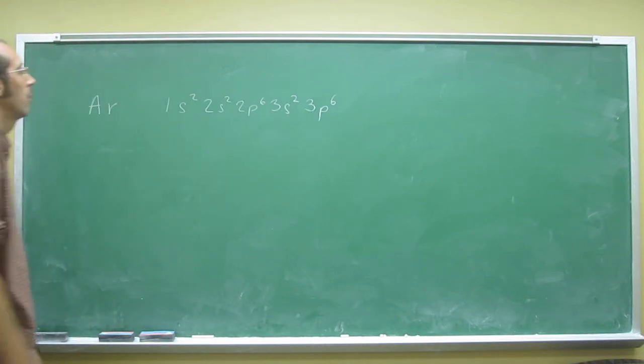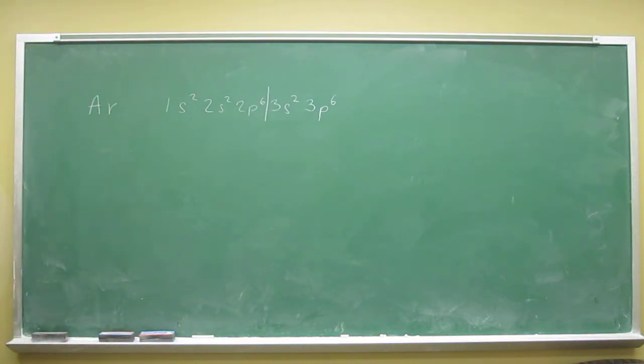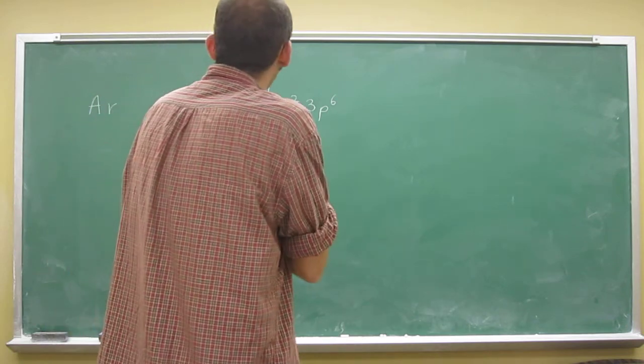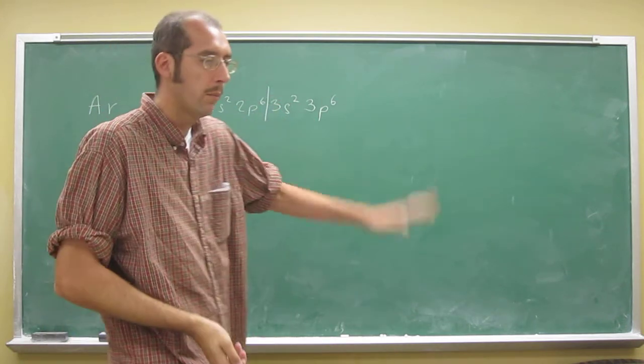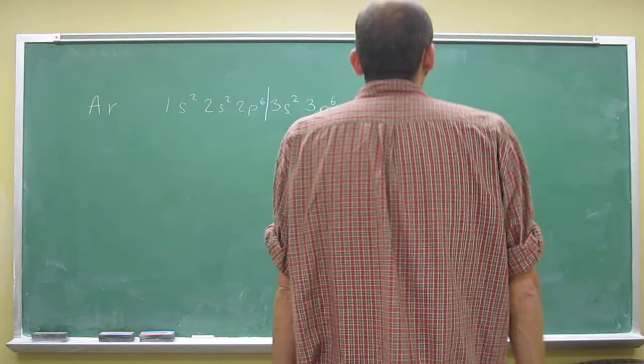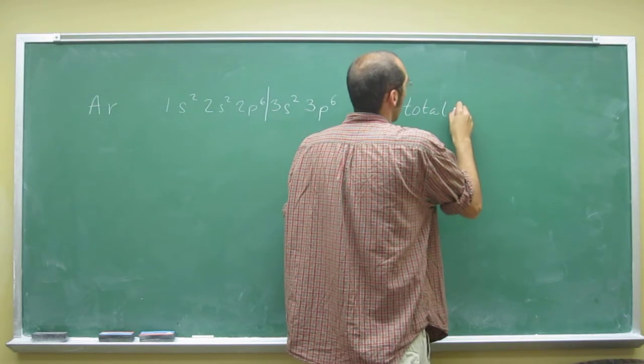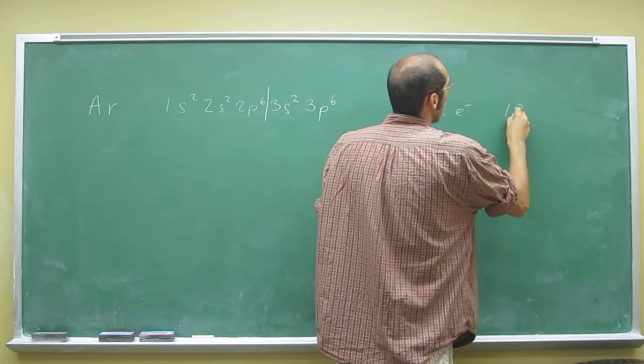So remember your valence electrons are just your last energy level. So total number of electrons, you can count them up, it gets kind of tedious at this point, or you can just look at the periodic table and it'll tell you. So the total number of electrons is going to be 18, right?